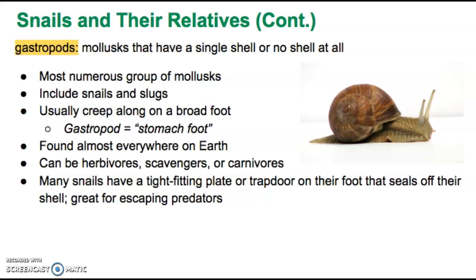Gastropods are mollusks that have a single shell or sometimes no shell at all. They're the most numerous group of mollusks — there are more gastropods than any other kind of mollusk. Slugs and snails are included in this category: snails always have a shell, slugs not so much, which is why you see that distinction in the definition. One thing all gastropods have in common is that they creep along on a broad foot. The word gastropod literally means 'stomach foot' — they crawl along on their bellies using a foot.